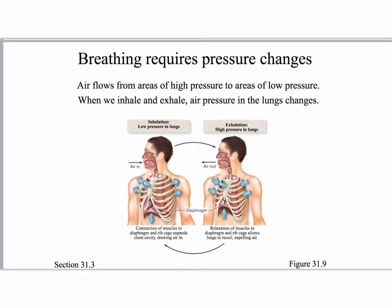Ventilation of lungs in most other tetrapods requires negative pressure. This uses a fibrous membrane called the diaphragm underneath the thoracic cavity to create a negative pressure inside the chest and pull air down into your lungs.